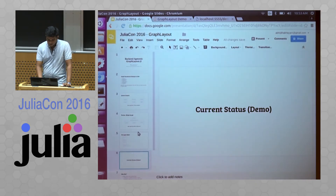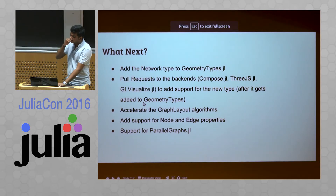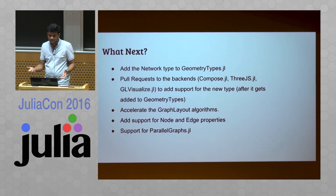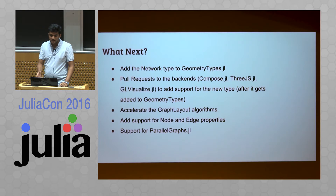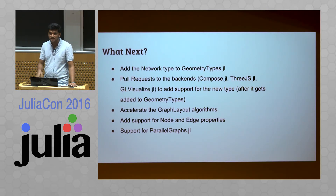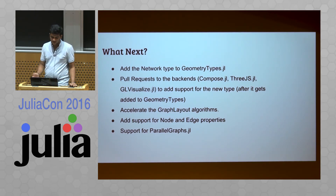What's next? We need to add the network type to GeometryTypes.jl so that all back-ends can work with the same type — a generalized feature. Then we'll submit pull requests to all the back-ends — Compose, 3Js, and GLVisualize — so they support the new type. Once the type is in place, you can just call the functions from each back-end and visualize easily.